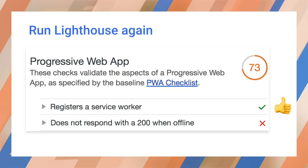When we run Lighthouse again, we can confirm that the first audit passes. Now you've seen how we use Lighthouse to guide development — give it a try for yourself. In the next episode, we'll add the code to make this site work offline. See you then.